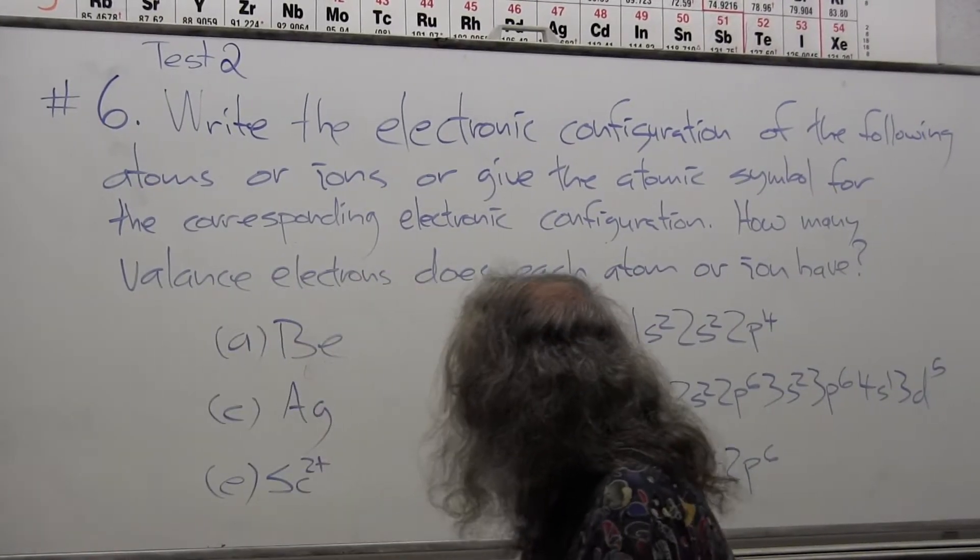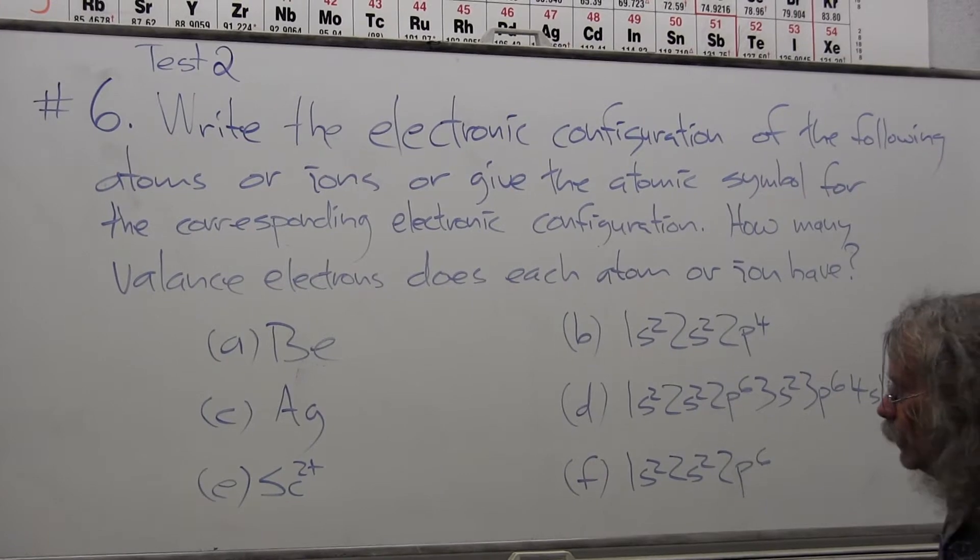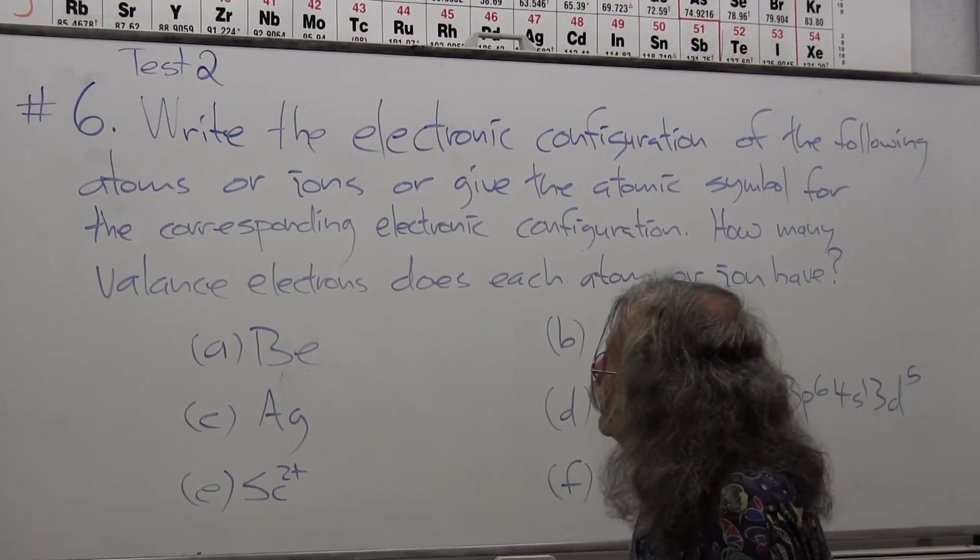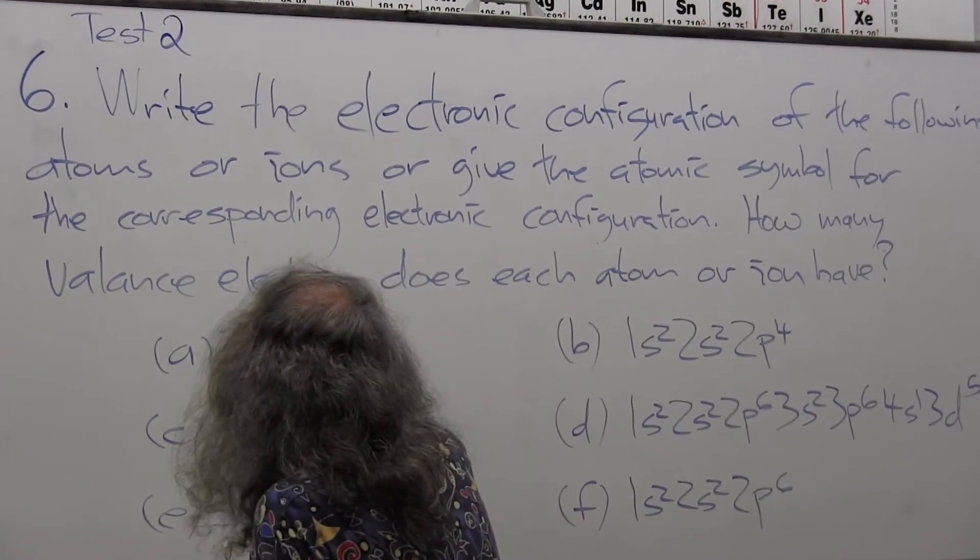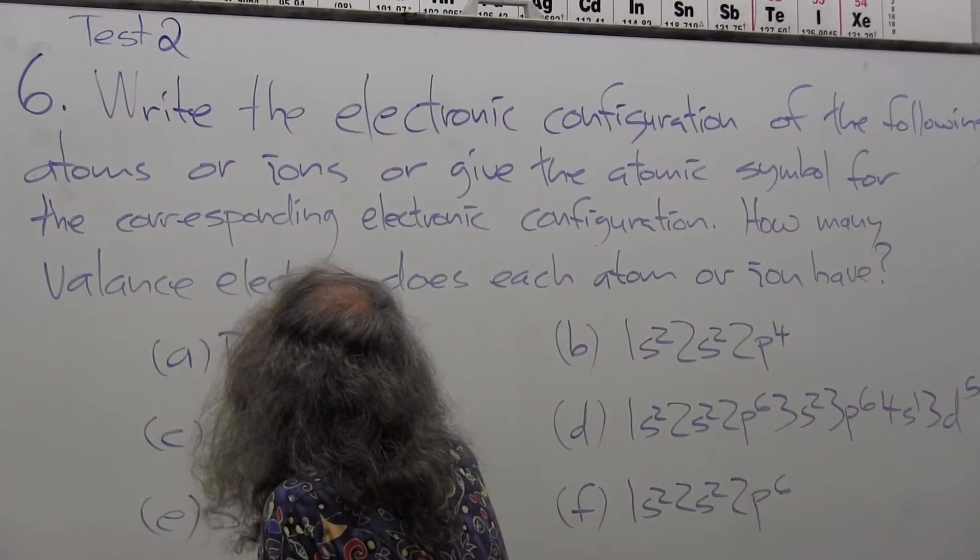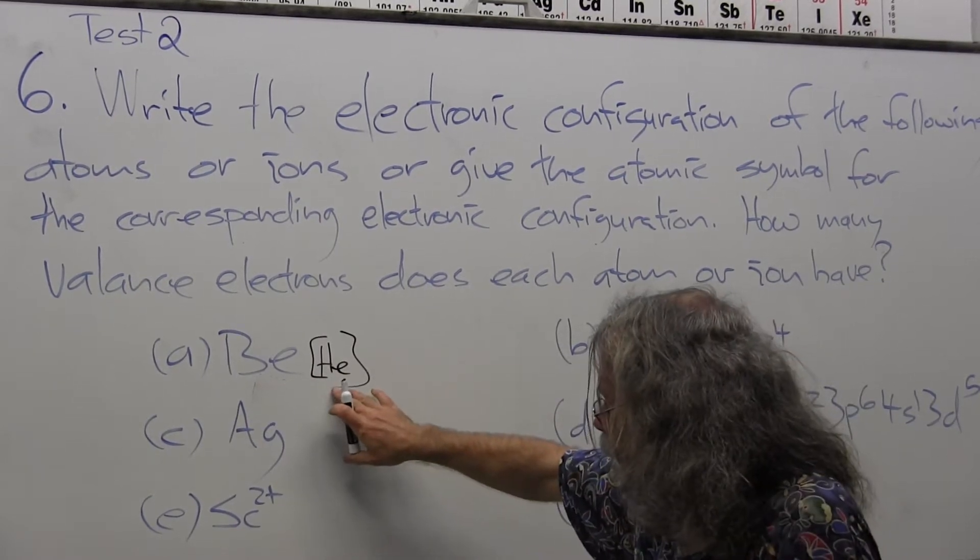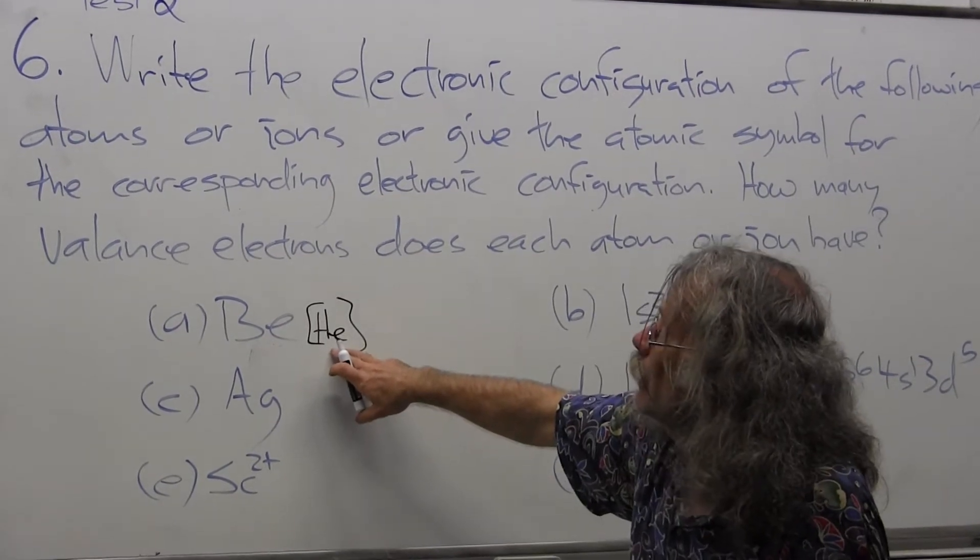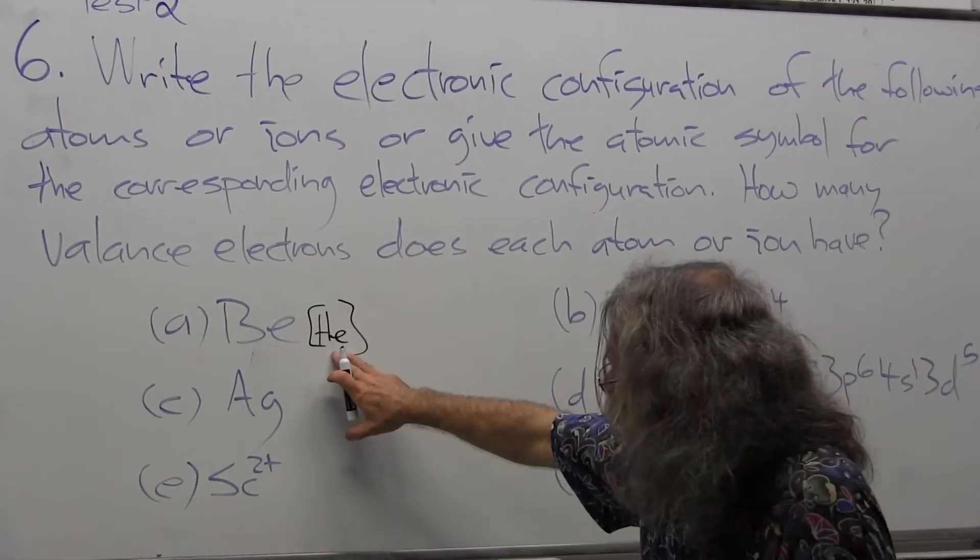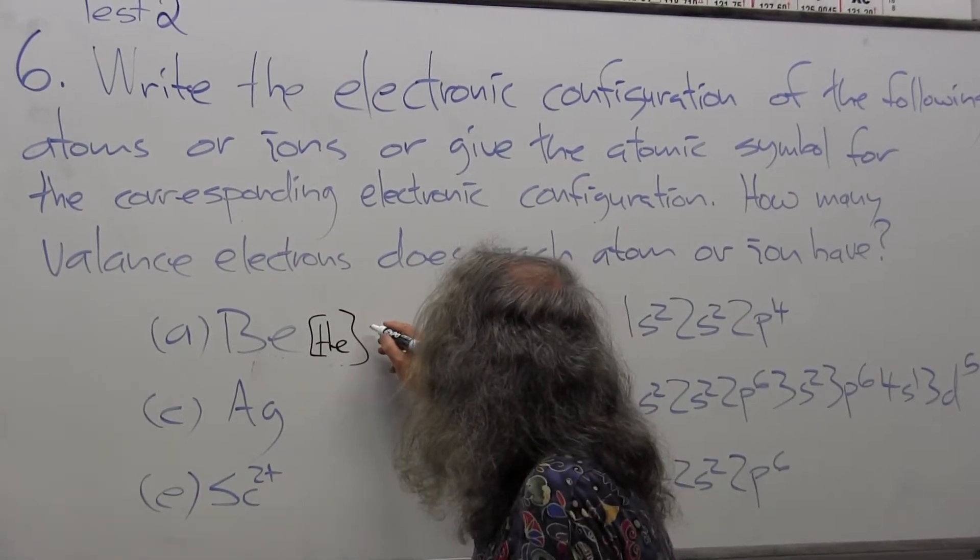Problem A is beryllium. Beryllium is in the second row, so I'm going to build it over a helium subshell. This is the core electrons for the K-shell, the inner core electron.